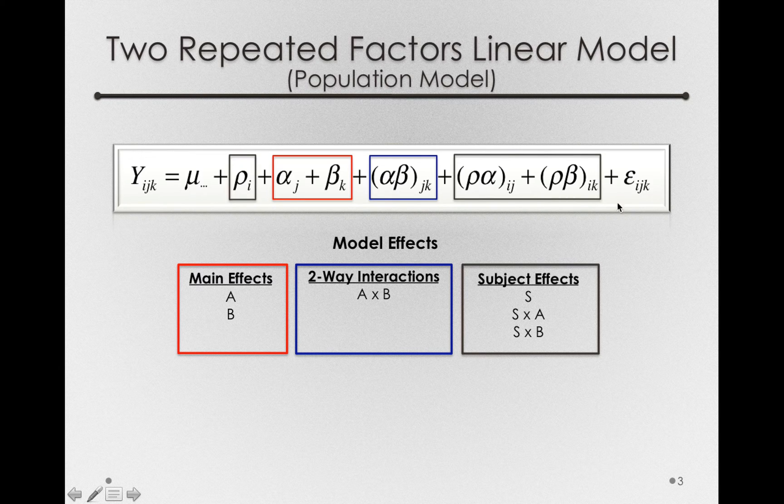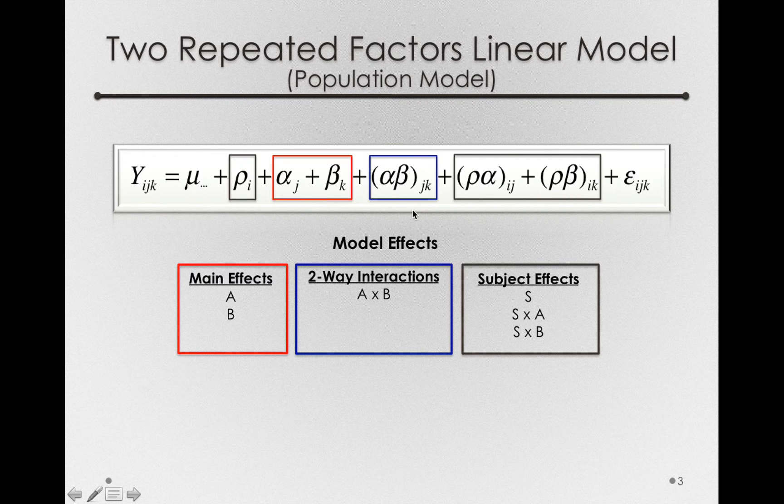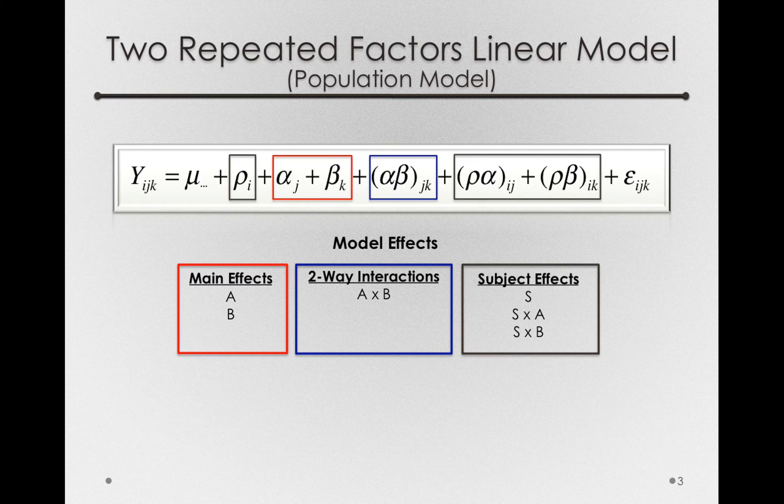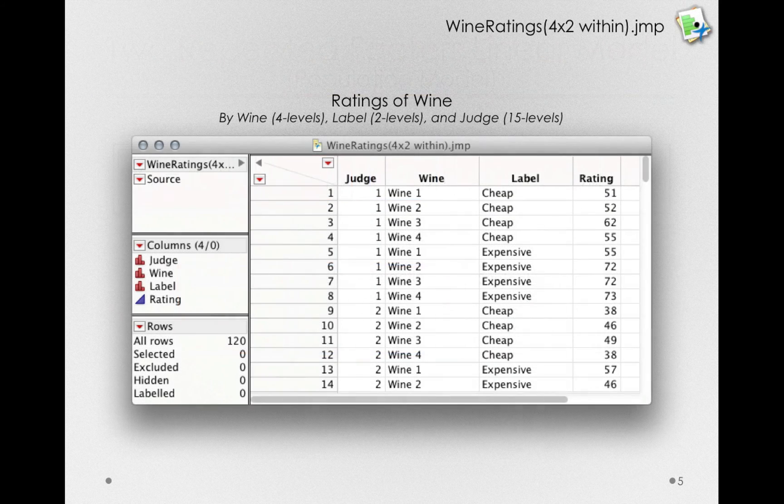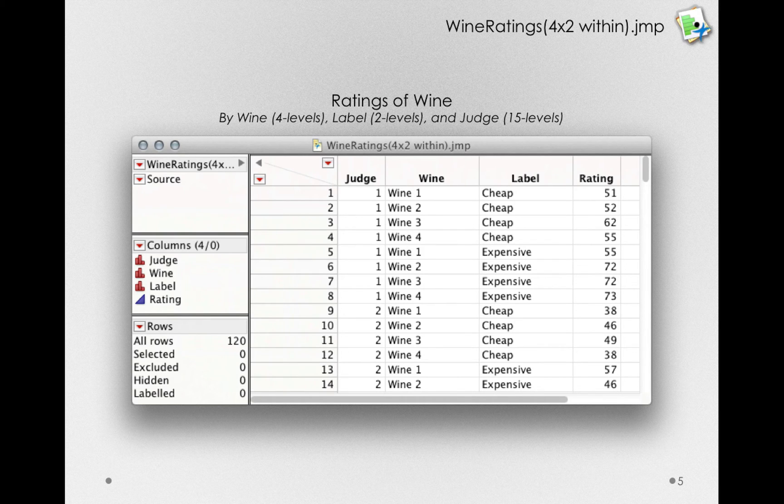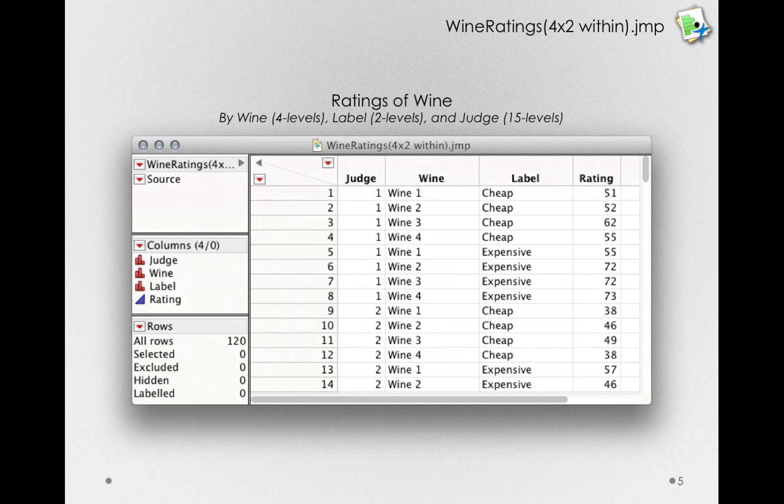Now, don't worry too much about this model setup. That's why the add-in is helpful since it will develop these model terms automatically for you. So, let's actually move forward and see how we would fit this model in Jump using the add-in. Turns out, it'll be as straightforward as fitting our one-factor linear model. We just need to know which place to put each of our different columns.